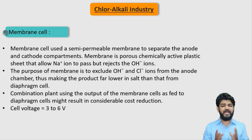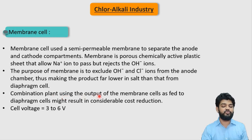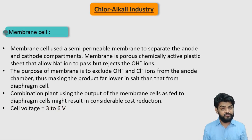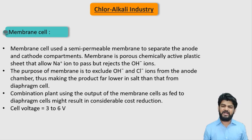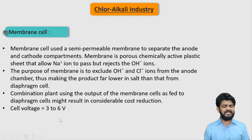The membrane only allows Na⁺ ions to pass and rejects negative hydroxyl and chloride ions. A combination of a membrane cell with a diaphragm cell can be used for considerable cost reduction. The cell voltage required for the membrane cell is around 3 to 6 volts, which is relatively less power consumption compared to the mercury cell.